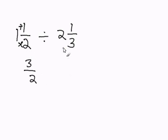We do the same thing to the other mixed number. Three times two is six, plus one is seven.